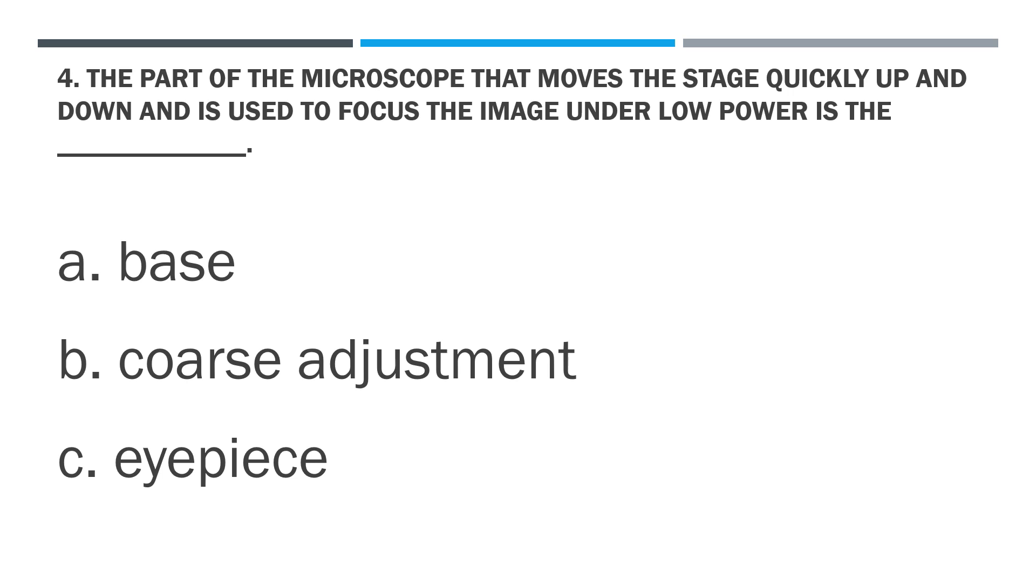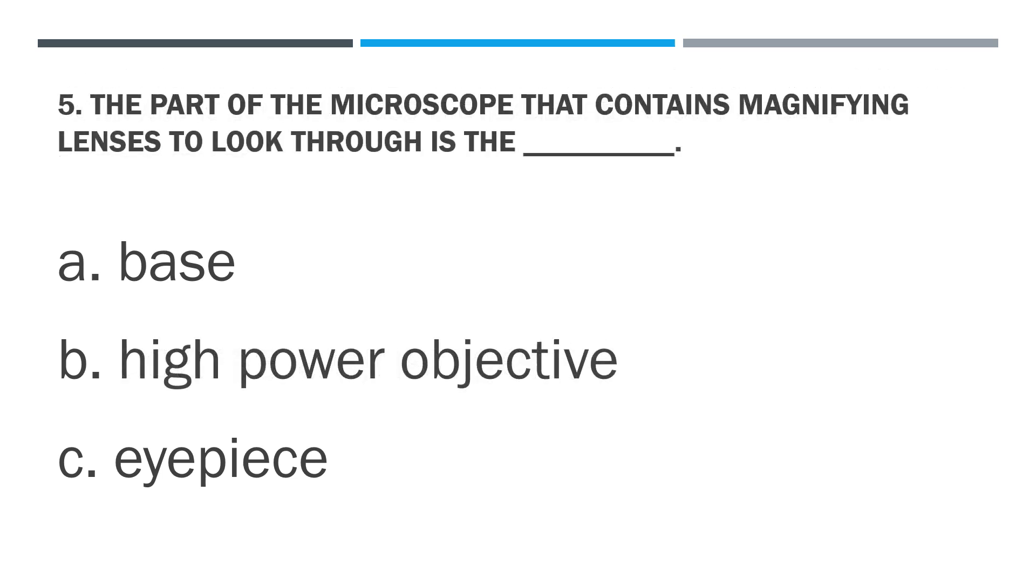Question 5: The part of the microscope that contains magnifying lenses to look through is the blank. The options are: A. Base, B. High power objective, and C. Eyepiece.